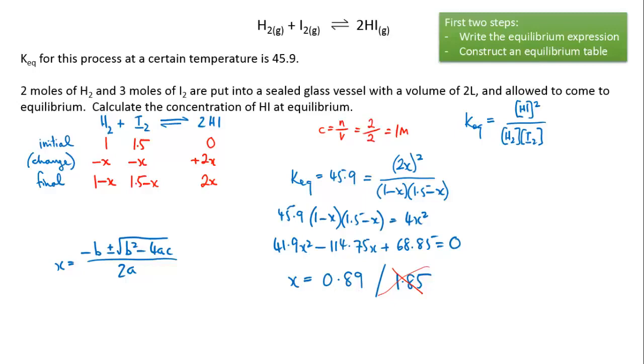So in this case x equals 0.89. So we can now answer the question that we were asked in the first place which was to calculate the concentration of hydrogen iodide at equilibrium.